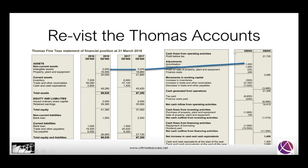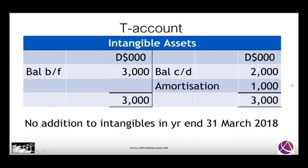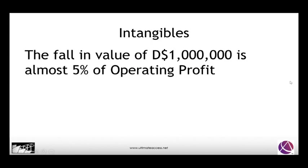Revisiting the accounts, we can see what went on within the cash flow. When the profit before tax was identified, they added back the one million of amortisation, which matches the reduction in the intangible asset value on the statement of financial position. There has been no addition to intangibles in the year ended 31st March 2018. The fall in value is almost 5% of operating property — a significant amount to have amortised over a year.